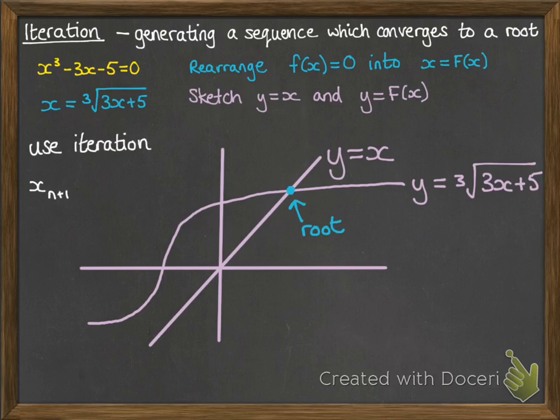Now, we use an iteration based on that form that we had in blue, where the next term that we're looking for, we use the previous term, times it by 3, add 5, and cube root it. And it helps us get successively closer to the root. I'll show you on the graph how this works.